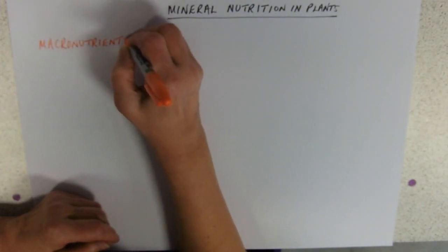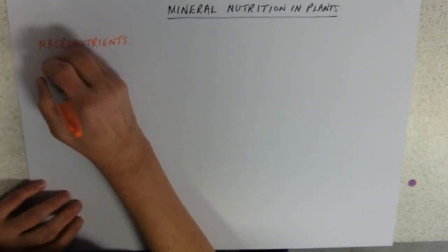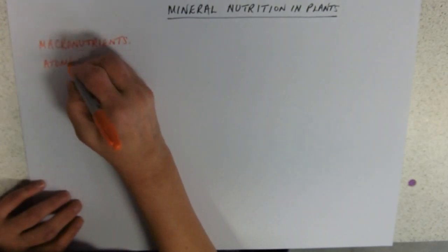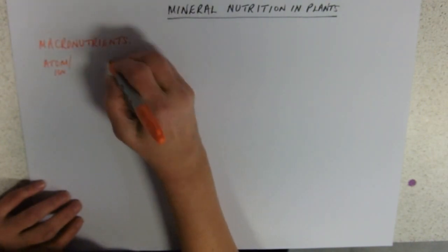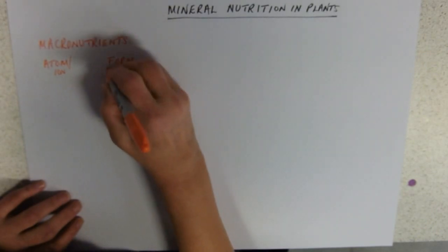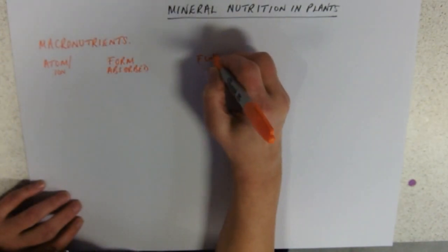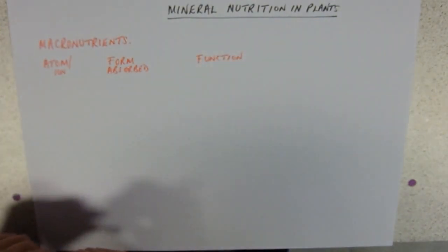We're just going to look at some macronutrients in plants. You need to know the atom that is required, or in one case the ion, you need to know the form in which it's absorbed, and you need to know its function inside the plant.